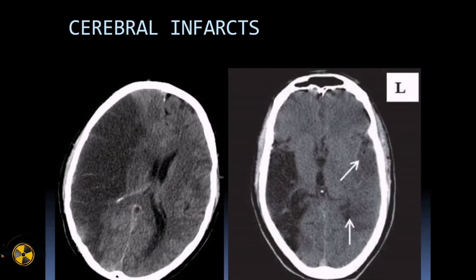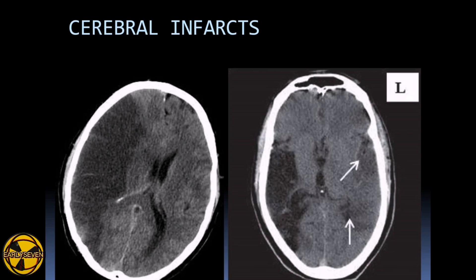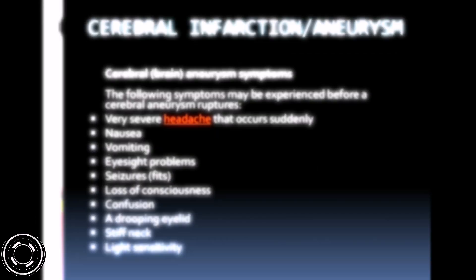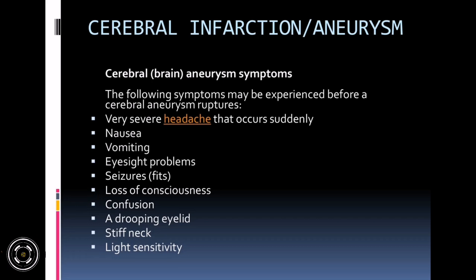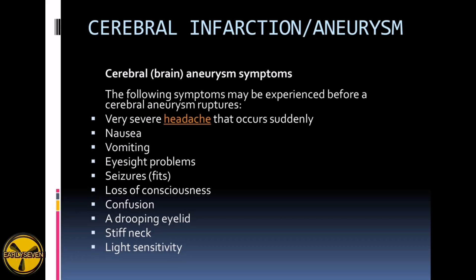The following symptoms may be experienced before a cerebral aneurysm ruptures: very severe headache that occurs suddenly, nausea, vomiting, eyesight problems, seizures, loss of consciousness, confusion, a drooping eyelid, stiff neck, and light sensitivity.